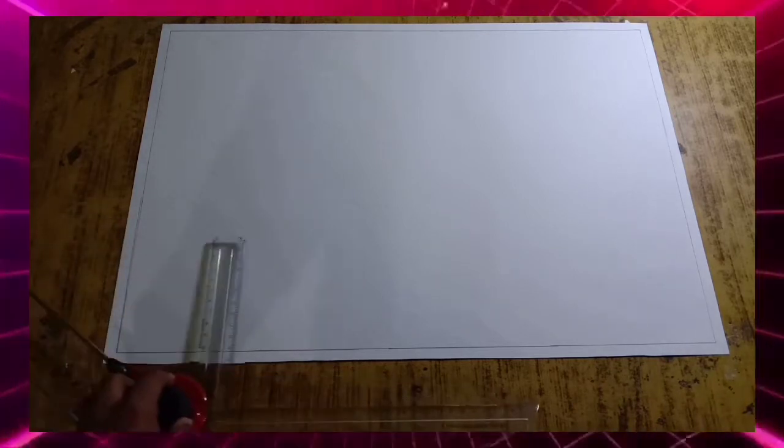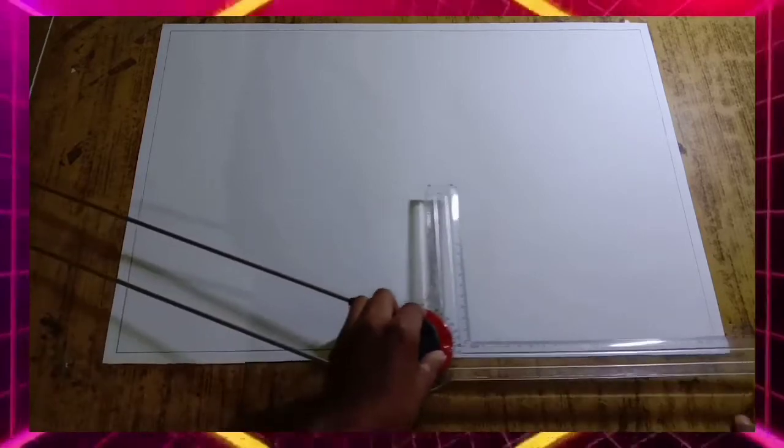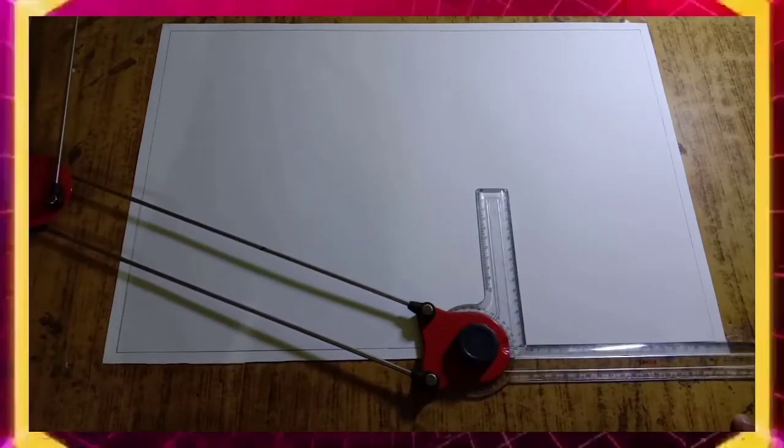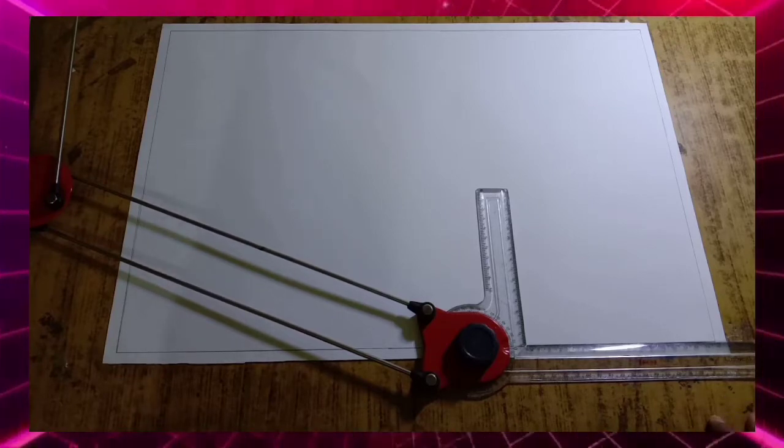After drawing the outlines of the sheet, you can draw the title box on the right hand side at the bottom. You can check the dimensions of this title box on your screen.